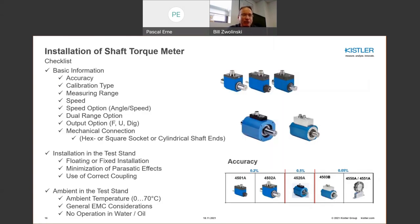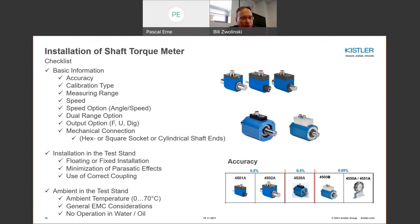For shaft torque meter installation, the first decision is accuracy. The accuracy class ranges from 0.05% to 0.2% to 0.5%, so there's a wide range. Key selection criteria also include calibration type, measuring ranges, and speed capabilities. Nowadays you can get a dual range option — there may be a large startup torque followed by a much lower running torque, allowing you to optimize your measuring range. There are floating and fixed installations for shaft torque meters, and you must look at coupling and parasitic effects. Temperature is usually the most common error source in almost any measurement.